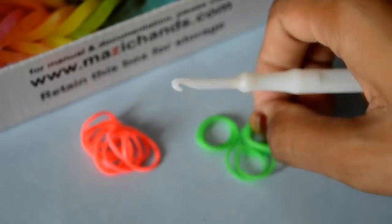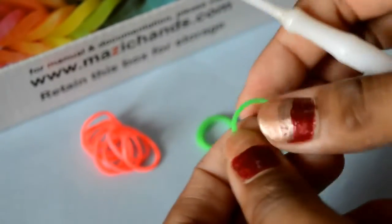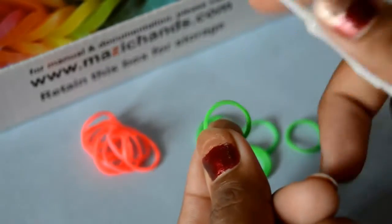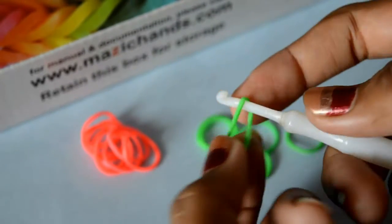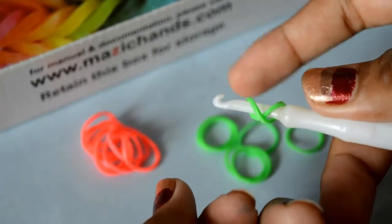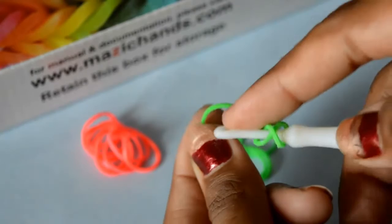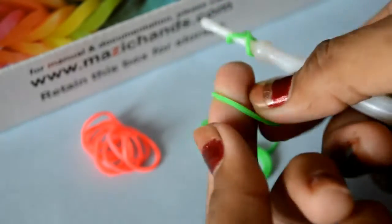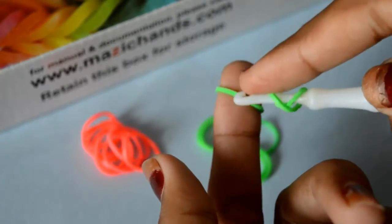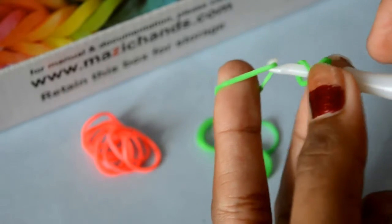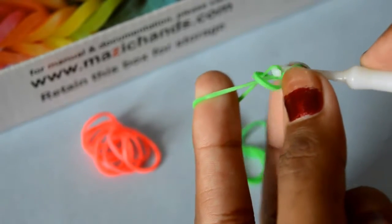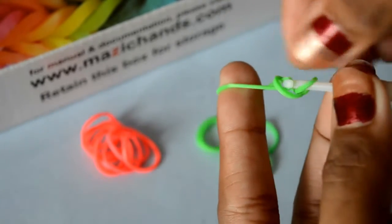Take one single rubber band and you have a hook. Wrap this rubber band on your hook two times like this. Now again, take one more rubber band and put this rubber band in your finger and with the hook stretch it to this rubber band from inside this double rubber band.